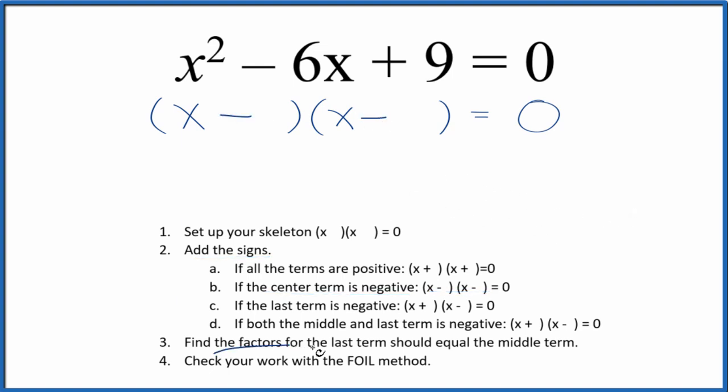Next, we're going to find the factors for that last term, that 9. And this should add up to the middle term, that negative 6. So the factors for 9, 1 times 9 and 3 times 3. So 3 plus 3, that would give us 6. Let's put a 3 here and a 3 here.